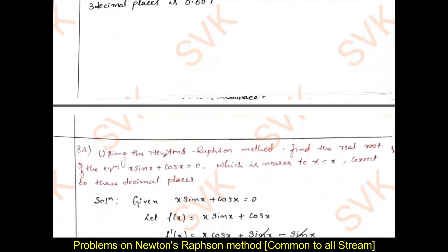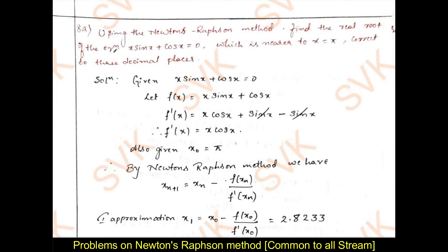Moving on to the next problem: using Newton-Raphson method, find the real root of x sin x plus cos x equal to 0. They have already provided x naught equal to pi, correct to three decimal places. So I am going directly for f dash of x. We have x sin x — apply product rule: x into derivative of sin x is cos x, plus sin x as it is into derivative of x is 1, plus derivative of cos x is minus sin x. Minus sin x and plus sin x get cancelled, leaving x cos x as f dash of x.